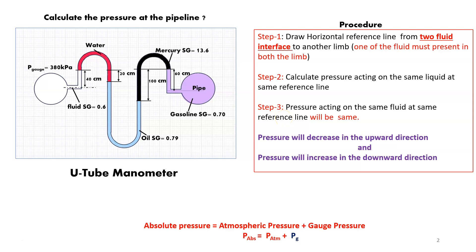Step 1: Draw a horizontal reference line from the two-fluid interface to another limb where one of the fluids is present in both limbs. Step 2: Calculate the pressure acting on the same liquid at the same reference line. Step 3: Pressure acting on the same fluid at the same reference line will be equal. Pressure decreases in the upward direction and increases in the downward direction.